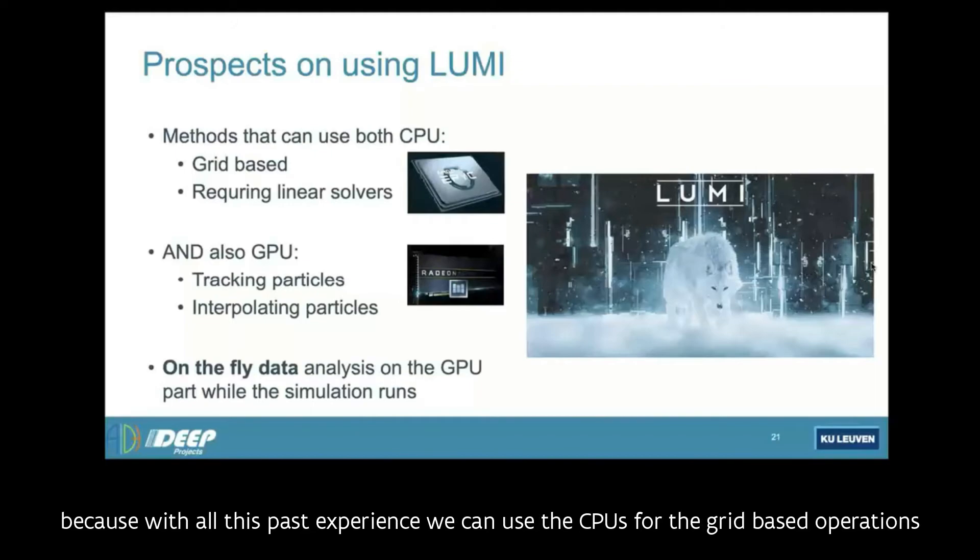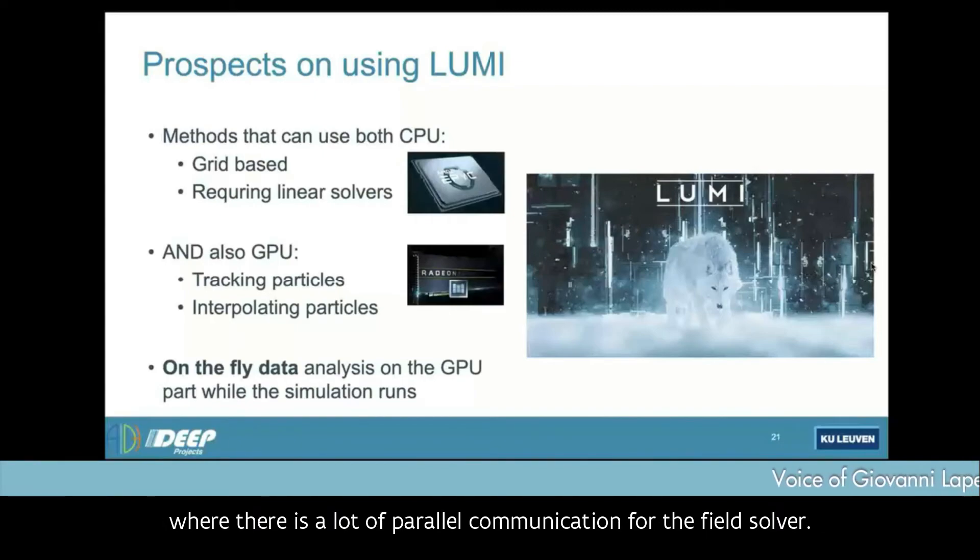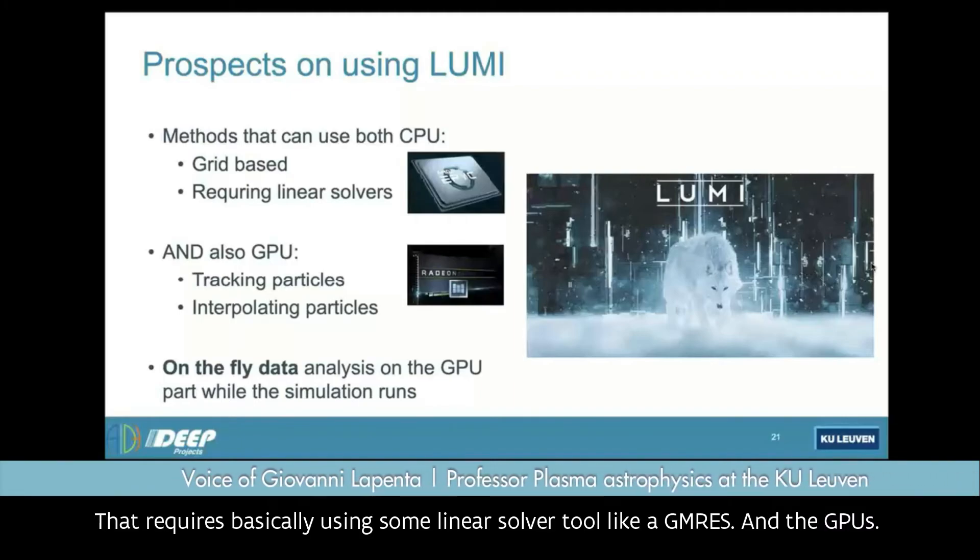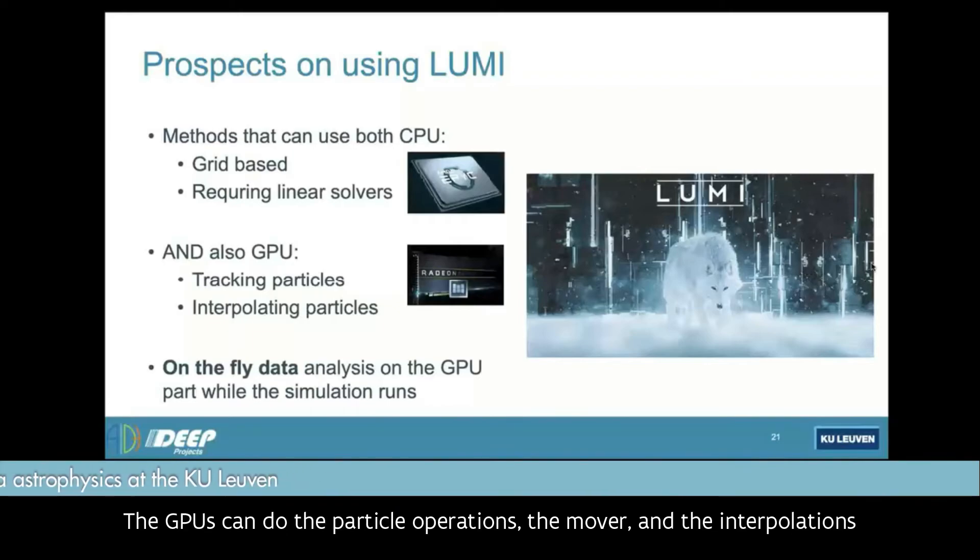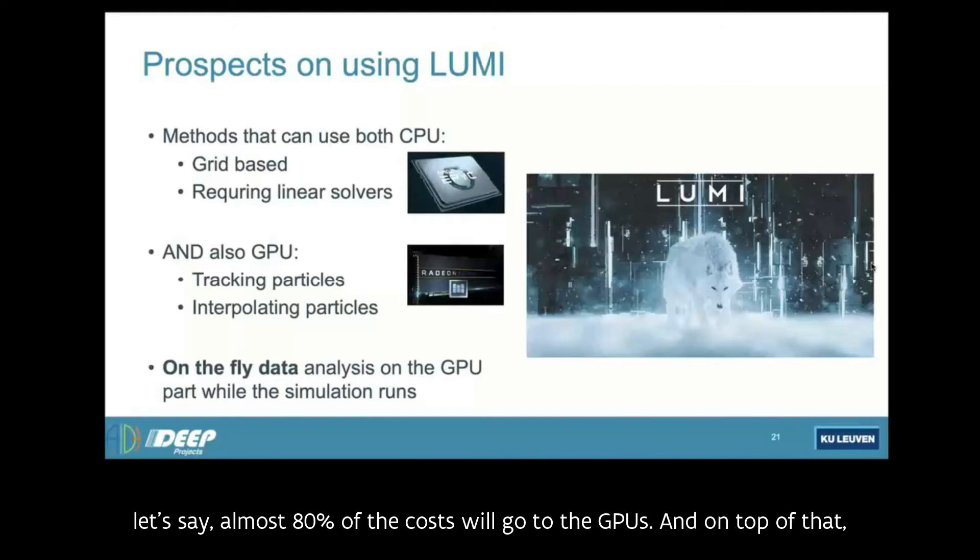So Lumi then presents a great opportunity in this direction because with all this past experience, we can use the CPUs for the grid-based operations where there is a lot of communication for the field solver that requires basically using some linear solver tool like GMRES. And the GPUs can do the particle operations, the mover and the interpolations, including the mass-matrix calculation, which is the lion's share of the computational cost. Let's say almost 80 percent of the cost will go to the GPUs.